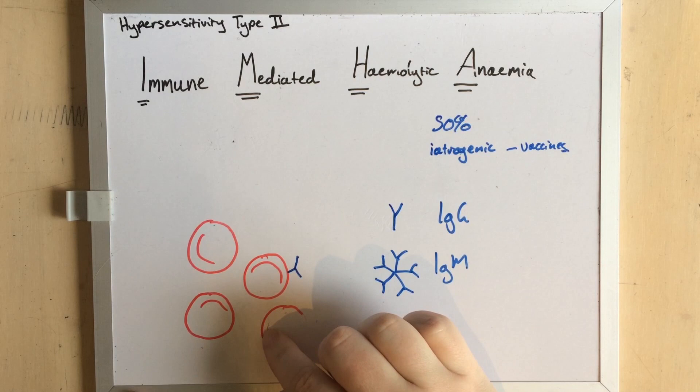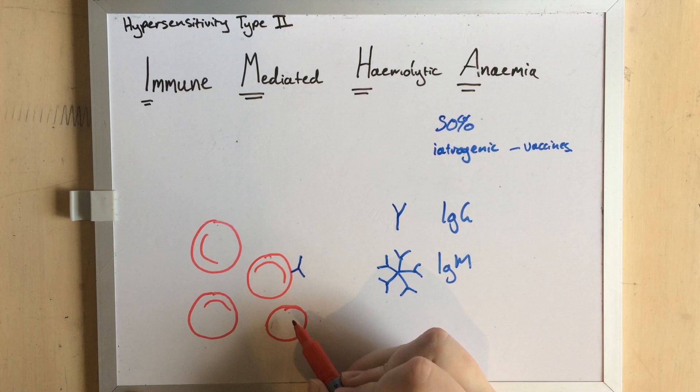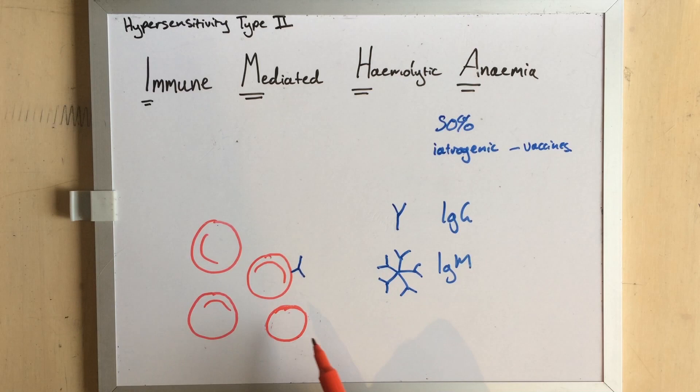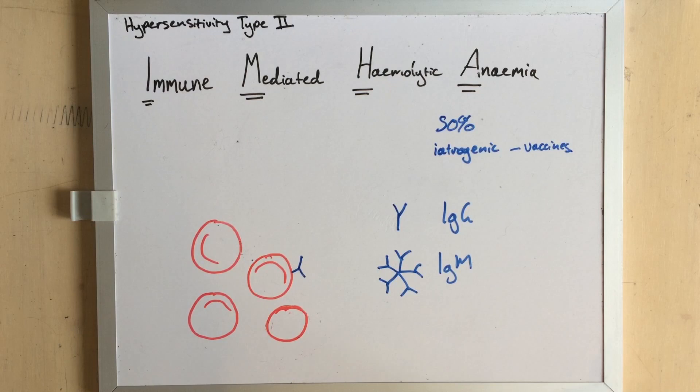Sometimes they consume the whole cell, and sometimes they just take a chunk of membrane out, leaving spherocytes behind. Spherocytes are red blood cells that have lost their inner tube shape and are now more spherical, which is a classic sign of IMHA. They are almost round and they're much smaller than a typical red blood cell.